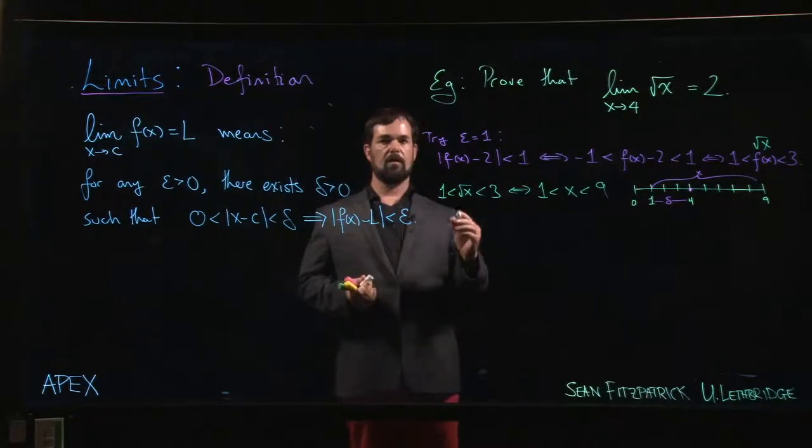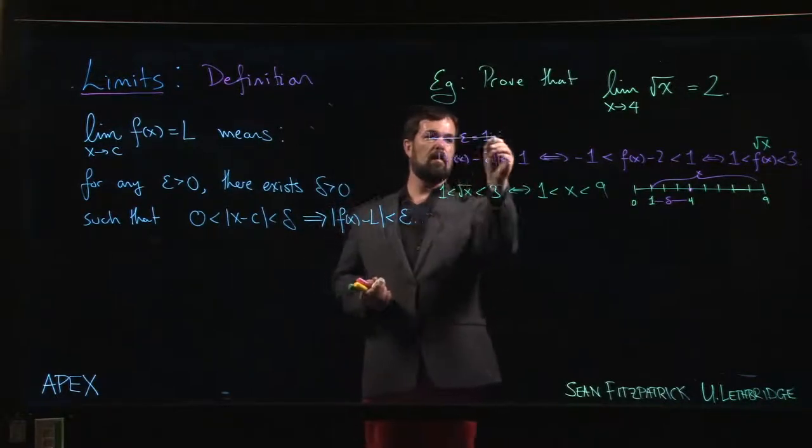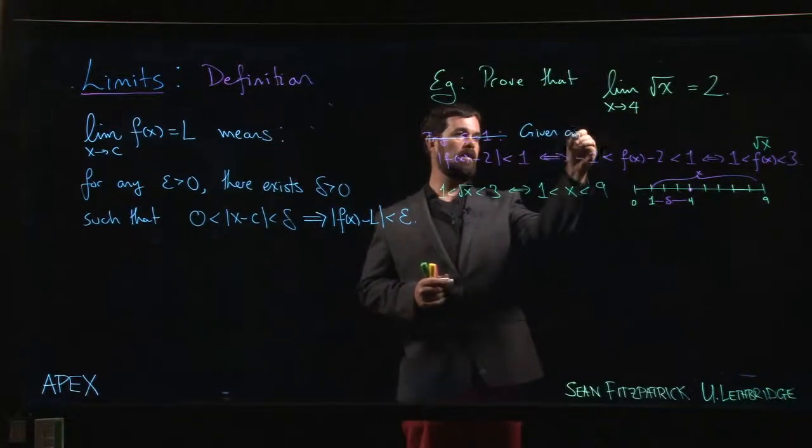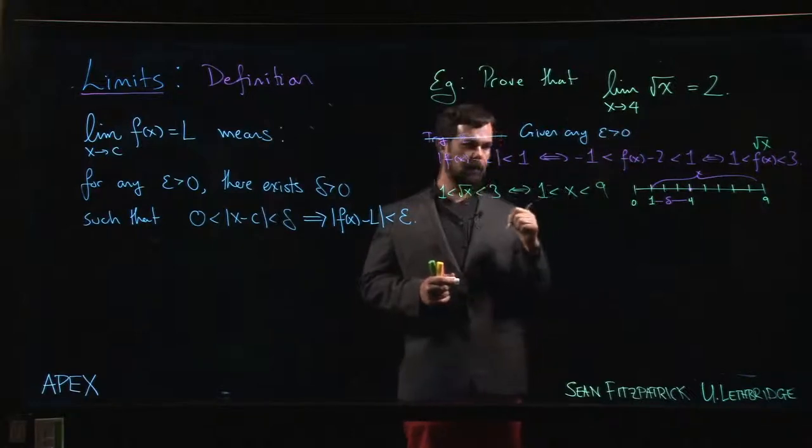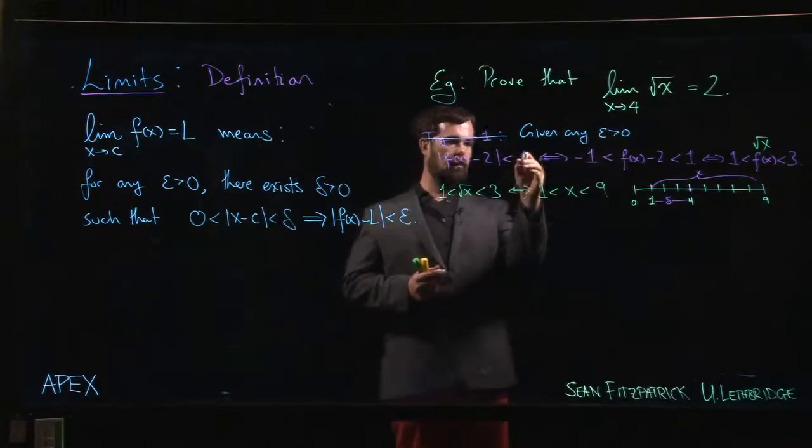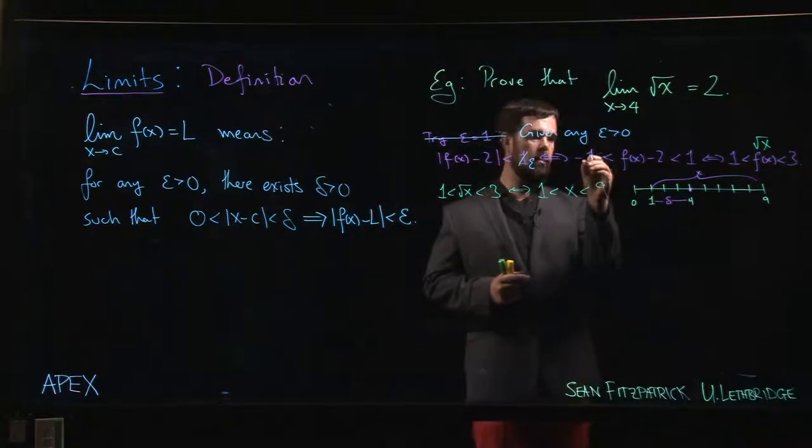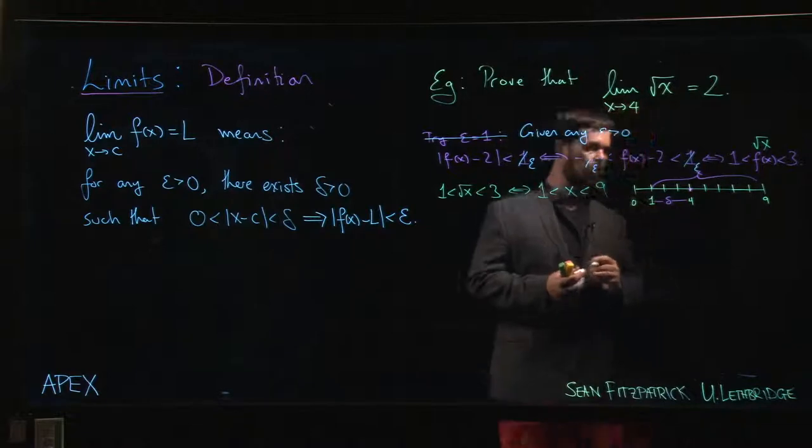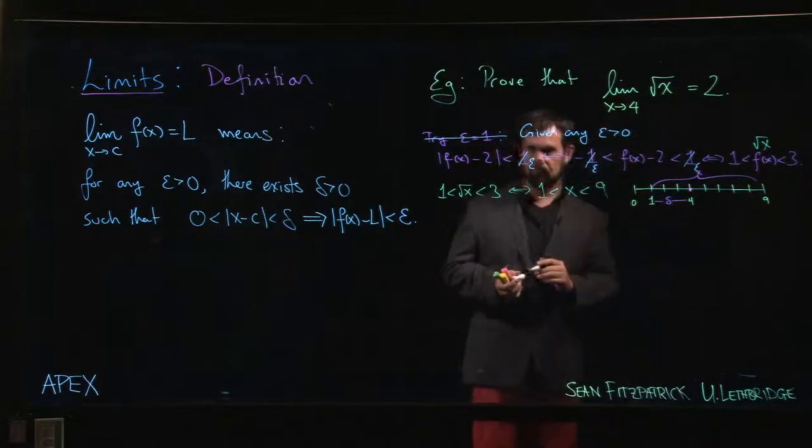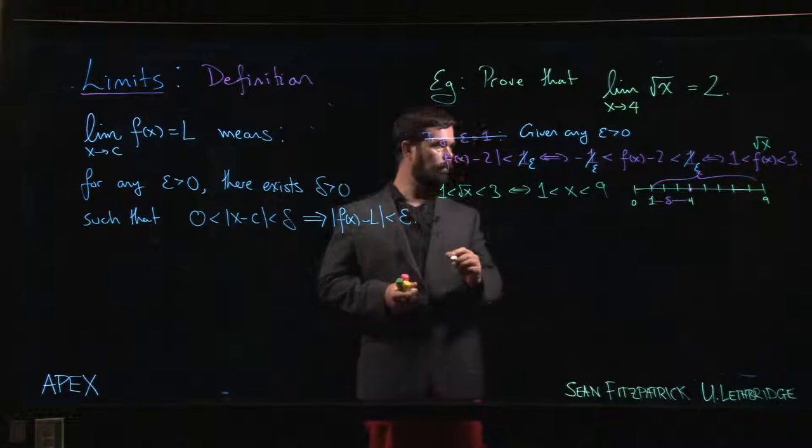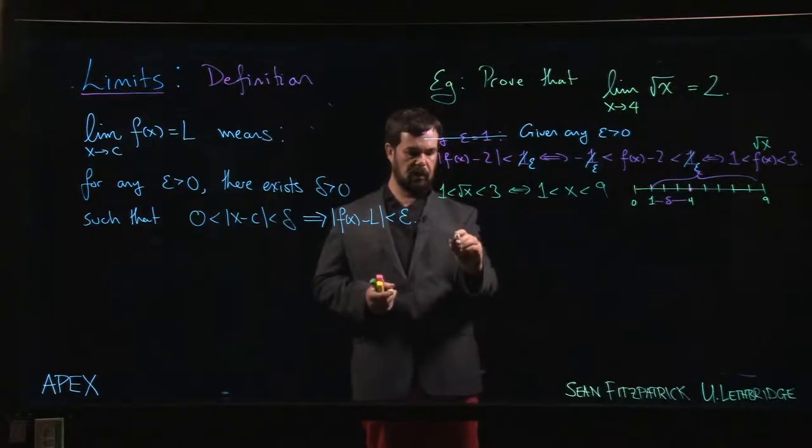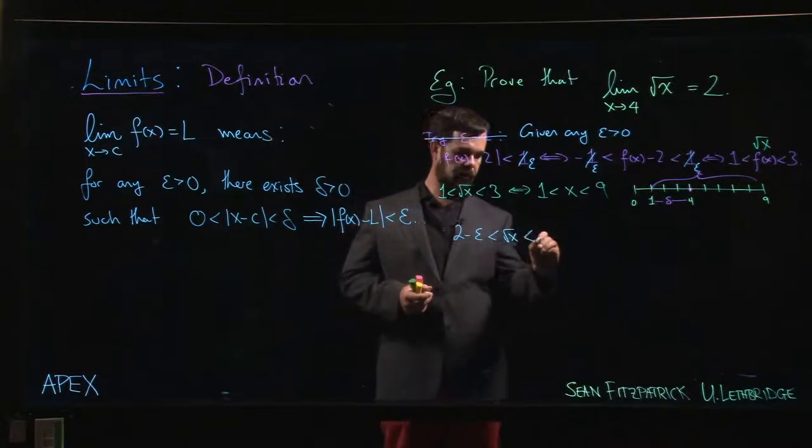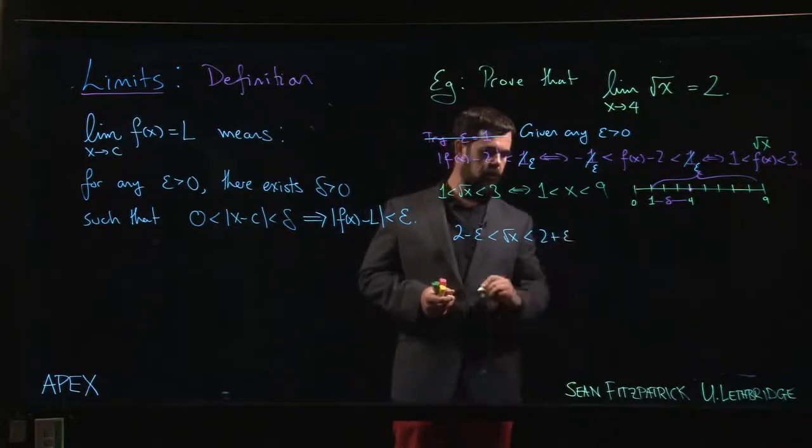Now, so what we want to do now is say, okay, given any epsilon bigger than 0, what happens? Well, now, this is epsilon. So I get down to something that's going to look like this. I'm going to have, so we add 2 to everything, I'm going to have 2 minus epsilon less than root x less than 2 plus epsilon, right?